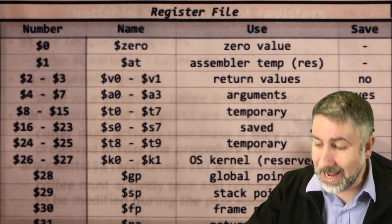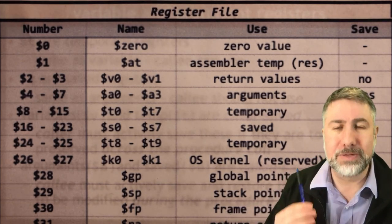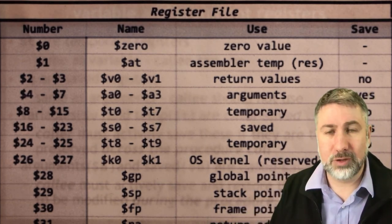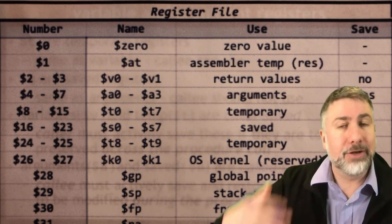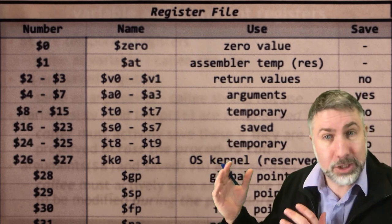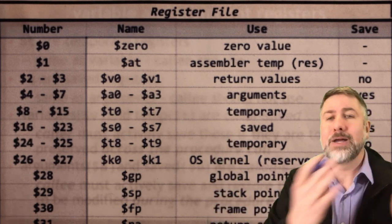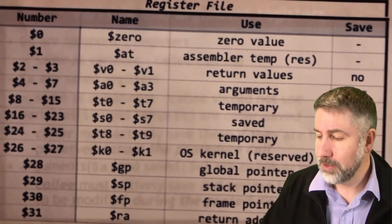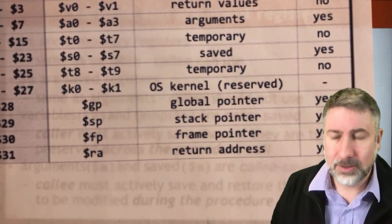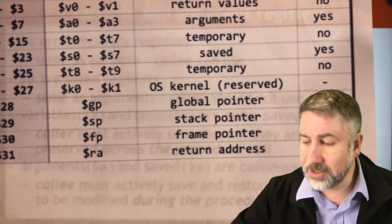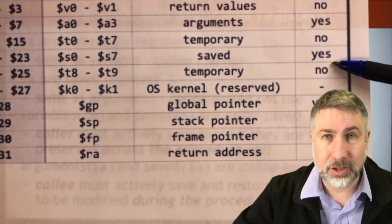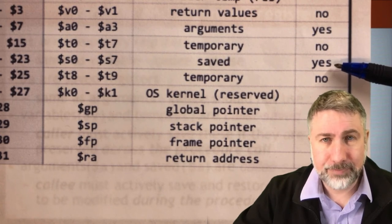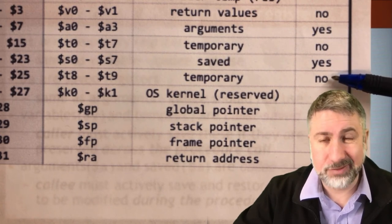Saved registers S are expected to be the same during subroutine calls. So if you have information in an S register and you call a subroutine, you can be sure that when the subroutine returns that information has not changed. We have a note in the register file that tells us whether these registers are saved across a subroutine or are not saved across a subroutine.